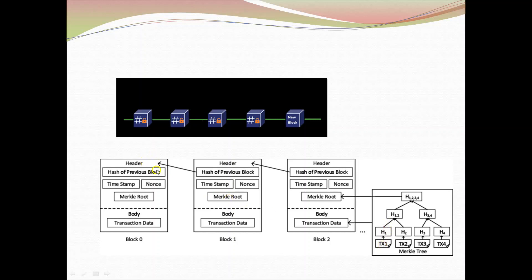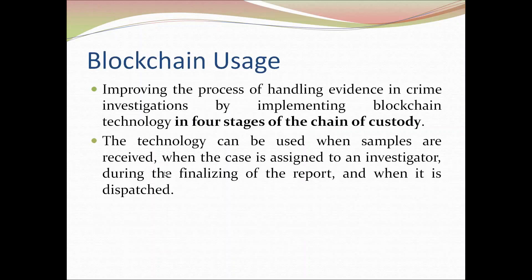We can traverse through that particular Merkle root to get details and hash information about each transaction. The header part maintains the metadata about a particular block, while the actual data kept in the transactions of a block is kept in the body part. We can maintain a number of transaction details in a particular block, depending on how much information can be stored in a block. These blocks are chained together based on the hash values, and the hash of the previous block plays an important role.